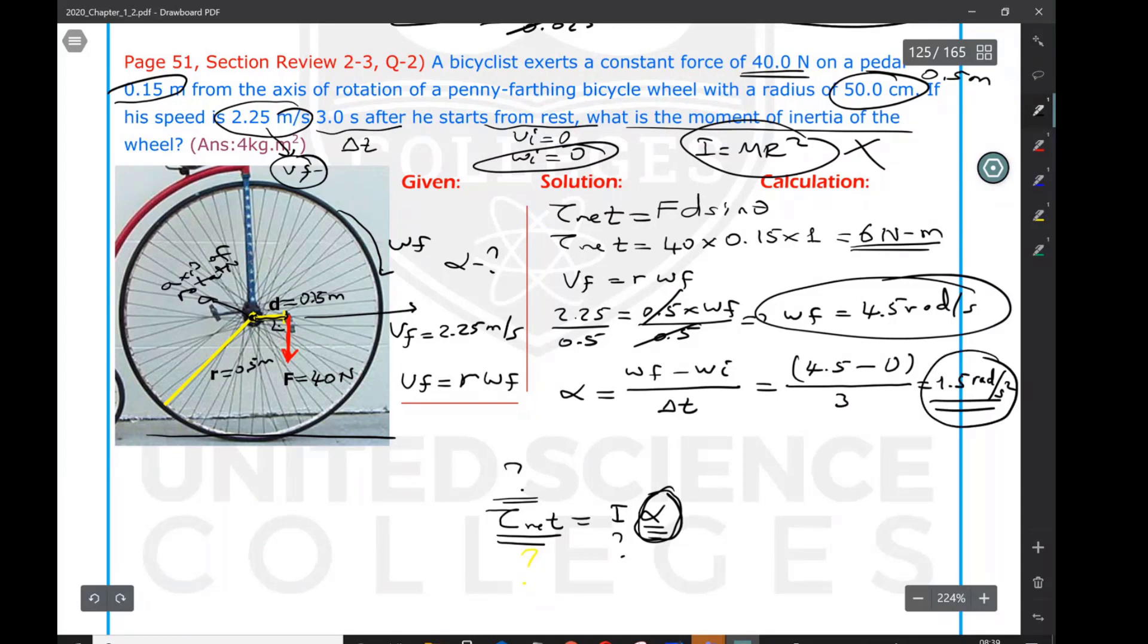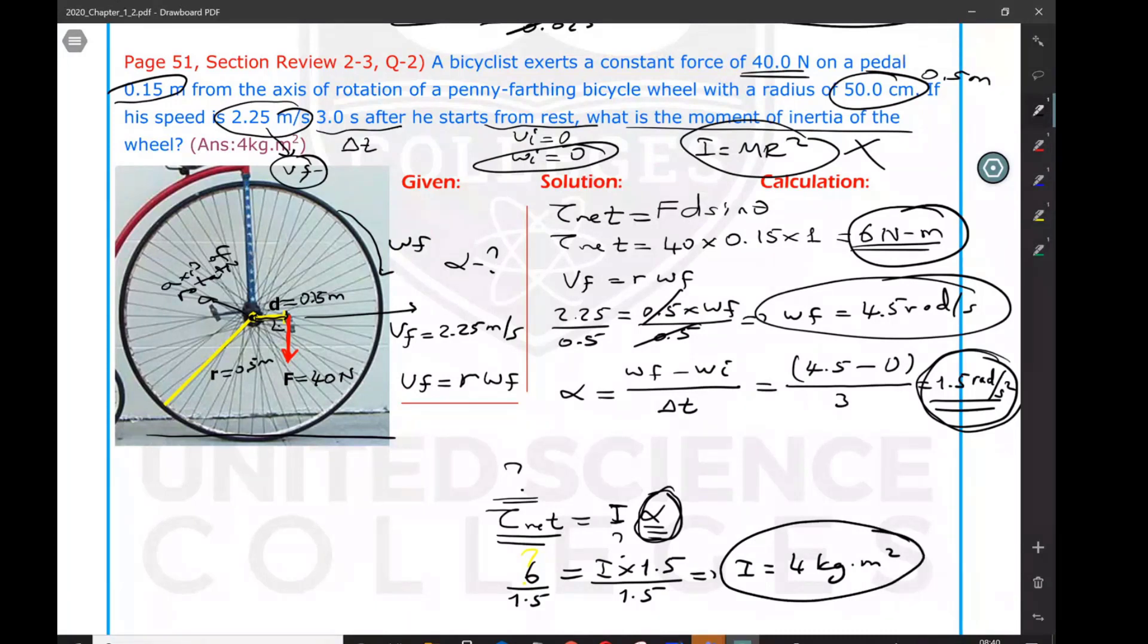We already got angular acceleration. Now the two things we need to calculate I, the moment of inertia: one is net torque which is 6, the second is α which is 1.5. So 6 equals I times 1.5. Divide by 1.5, and you get I = 6/1.5 = 4 kg·m². This is the moment of inertia of this bicycle tire.